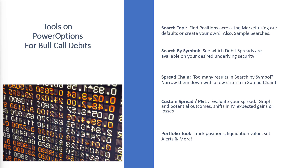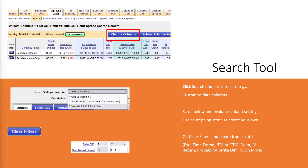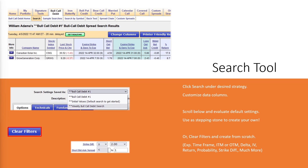Let's look at each one a little bit more individually. The Search tool — just click Search under your desired strategy. You can customize the data columns to select which columns you wish to view for your analysis. Scroll through the default settings below the listed results and use these settings as a stepping stone, or clear the filters and start from scratch.